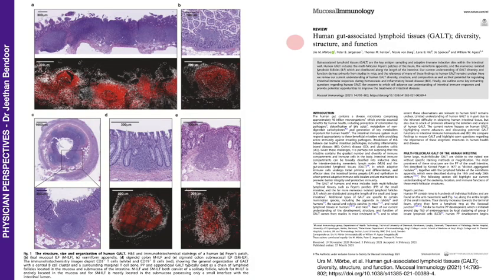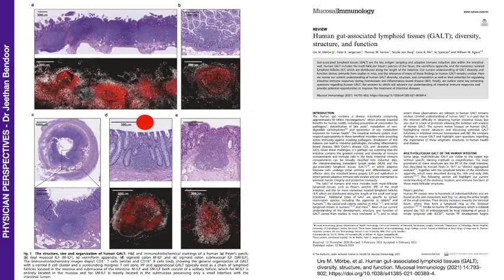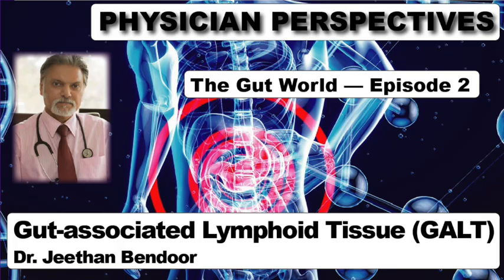In this paper — 'Human gut-associated lymphoid tissues: diversity, structure and function' — the authors present tissue which has been stained, showing the Peyer's patches, the isolated lymphoid follicles, the appendix, as well as isolated lymphoid follicles in the colon. Let's get into the functions of the GALT in the next few episodes. Thank you for watching.